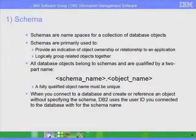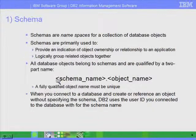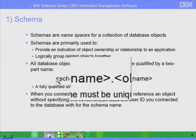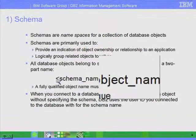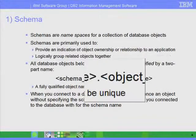Every object in DB2 has two parts, as you can see from the slide. The first part is the schema name, and the second part is the object name. This is divided by a dot.